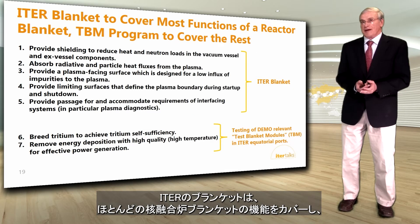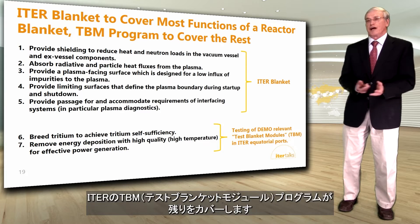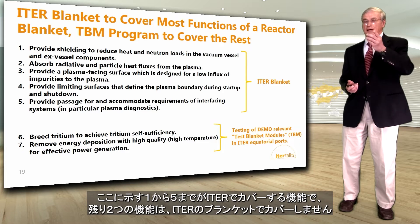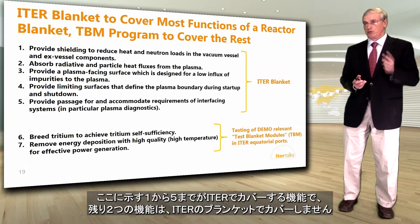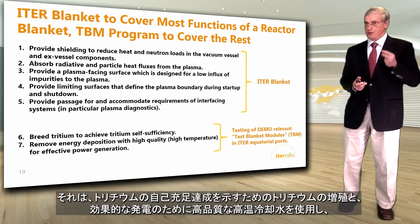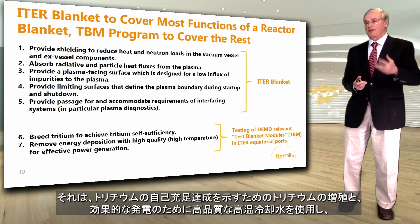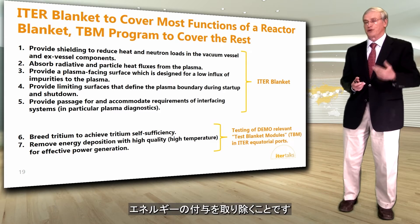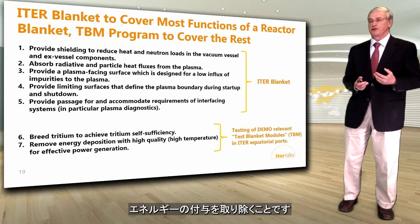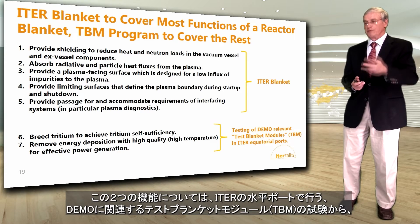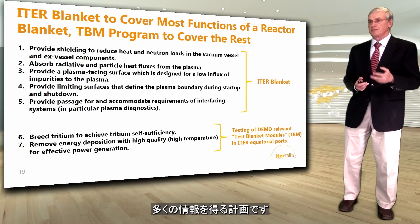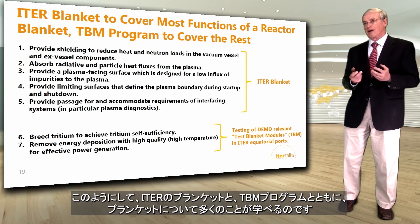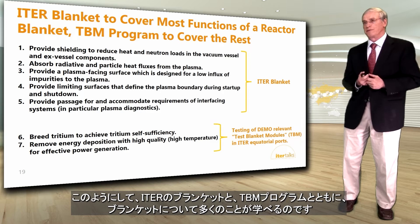The ITER blanket covers most functions of the reactor blanket, and the TBM program in ITER will cover the rest. Functions one through five are covered by ITER. The two functions the ITER blanket does not cover — breeding tritium to show that tritium self-sufficiency can be achieved, and removing energy deposition with high-quality high-temperature coolant for effective power generation — will be addressed through testing of DEMO-relevant test blanket modules in the ITER equatorial ports.